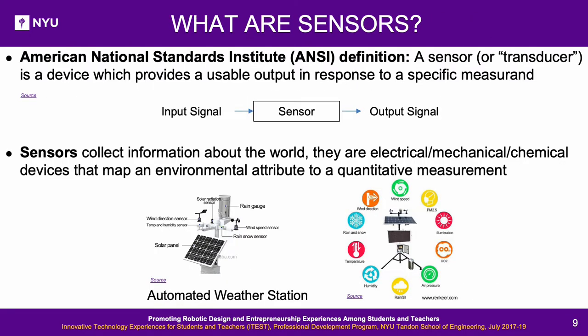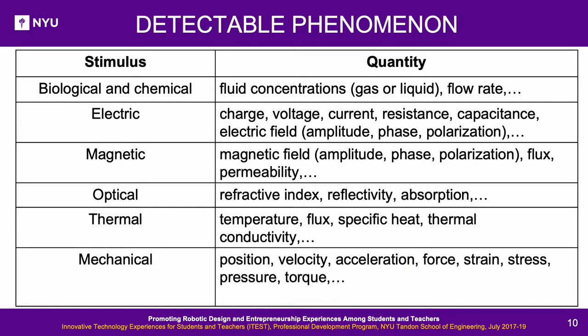What are sensors? Sensors collect information from their surroundings and generate an output signal based on input stimuli — this could be change in temperature, applied force, change in light brightness, or increase/decrease of CO2, etc. They react to those changes and usually convert them into another form, such as voltage, so it can be understood by humans or machines. The formal ANSI definition: a sensor, or transducer, is a device which provides a usable output in response to a specific measurable detectable phenomenon. Sensors can detect light, sound, proximity, heat, position, velocity, and more.